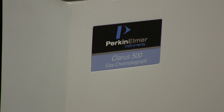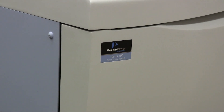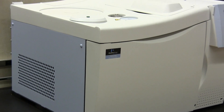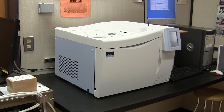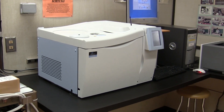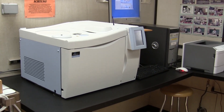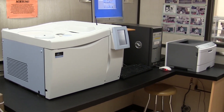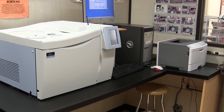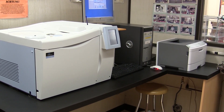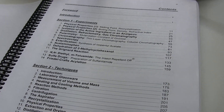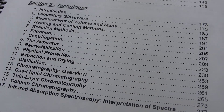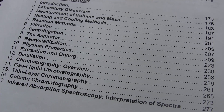The chemistry department uses the PerkinElmer CLARIS 500 gas liquid chromatograph, or GLC, or just GC for short. Shown here, it's operated by software running on an attached PC. Chromatograms can be monitored in real time and hard copy sent to the attached printer. In this video, we take a look at how to use the GLC, and you should check out the techniques section of your lab manual for more information on the theory of GLC.